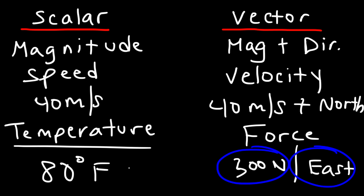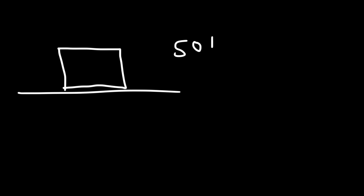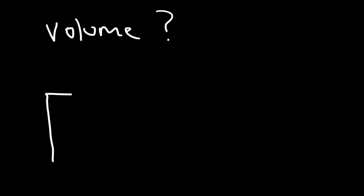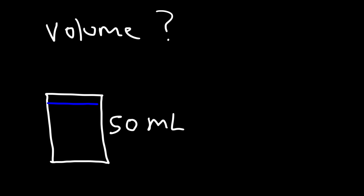Another scalar quantity is mass. If you want to find out how much matter is in an object and this box has a mass of 50 kilograms, you can't apply a direction to that — you can't say it's 50 kilograms north or 80 kilograms south. So mass is a scalar. To determine if something is scalar or vector, ask yourself: can I apply a direction to it? Volume, for instance — a container holding 50 milliliters of fluid north doesn't make sense, so volume is a scalar quantity.